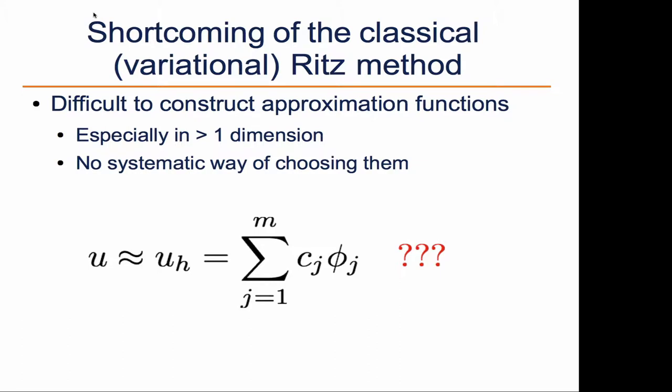So the shortcoming of the Ritz method is that, remember, in the Ritz method we haven't discretized anything yet. And so far we've been working with beams, which are straight elements.